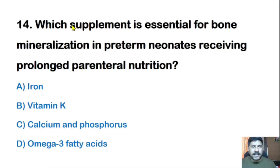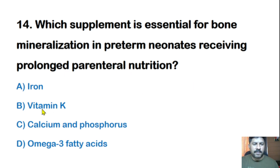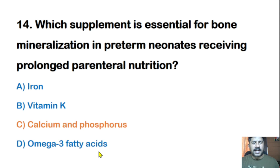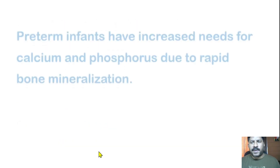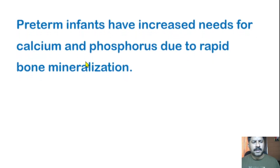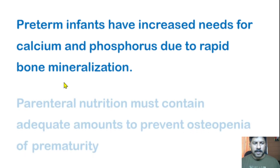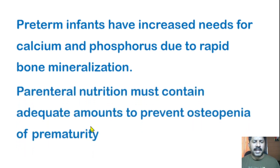Fourteenth question: Which supplement is essential for bone mineralization in preterm neonates receiving prolonged parenteral nutrition? Options: iron/vitamin K, calcium and phosphorus, or omega-3 fatty acids. The correct answer is calcium and phosphorus. Preterm infants have increased needs for calcium and phosphorus due to rapid bone mineralization, and parenteral nutrition must contain adequate amounts to prevent osteopenia of prematurity.